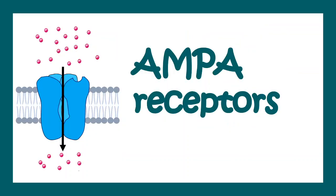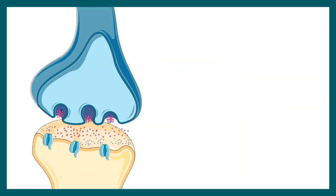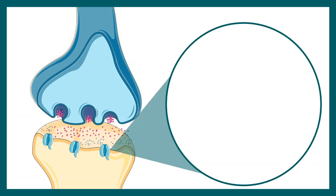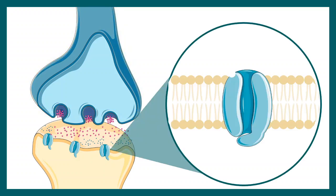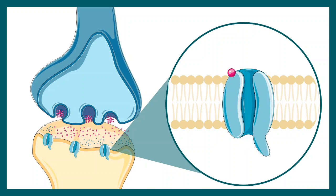The first type of ionotropic glutamate receptor we are going to talk about is AMPA receptors. AMPA receptors are found in the postsynapse in glutamatergic neurons. When the presynaptic action potential reaches the nerve terminal, it releases glutamate into the cleft. In the postsynapse, AMPA receptors bind to glutamate and allow the influx of cations inside the neuron, making the membrane more positive and leading to a postsynaptic potential or postsynaptic current.